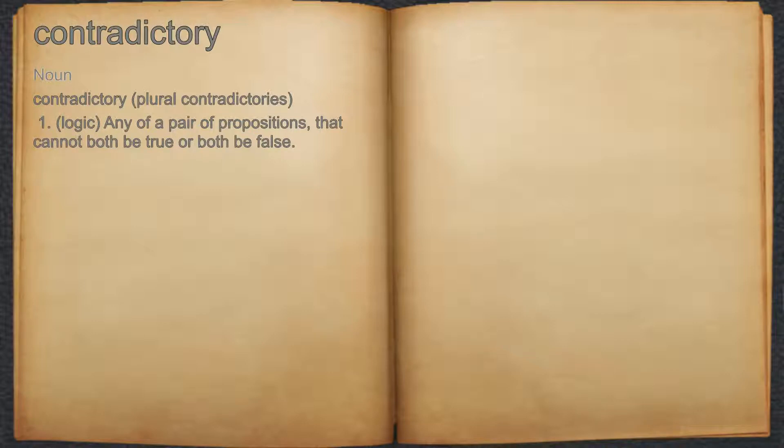Contradictory — Noun. 1. Logic: any of a pair of propositions that cannot both be true or both be false.